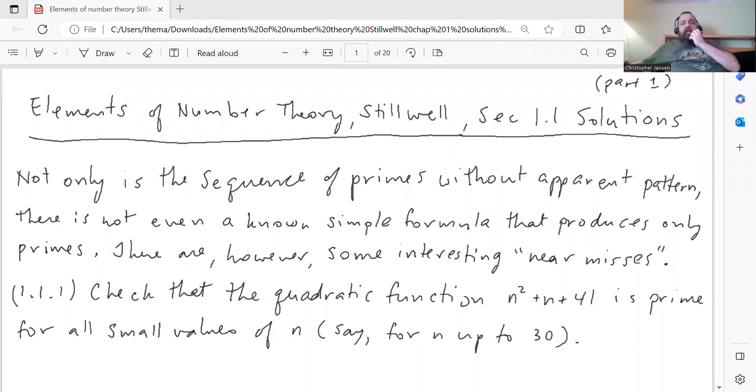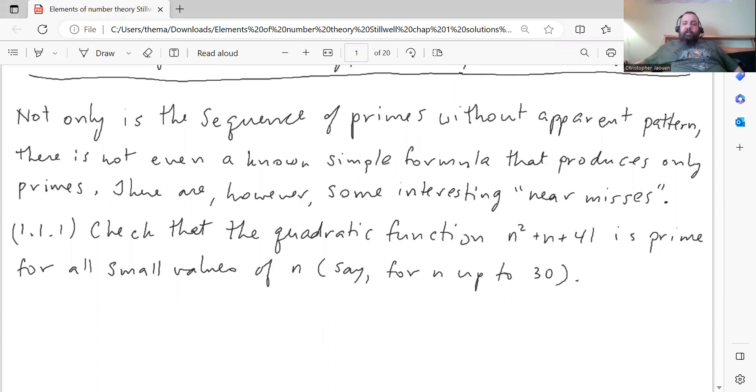Starting in section 1.1. He says before question 1, not only is the sequence of primes without a parent pattern, there is not even a known simple formula that produces only primes. There are, however, some interesting near misses. Check that the quadratic function n squared plus n plus 41 is prime for all small values of n, say for n up to 30.